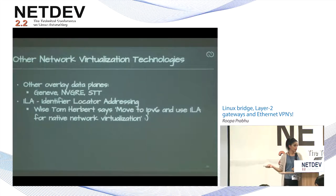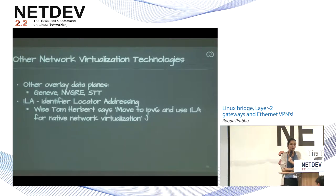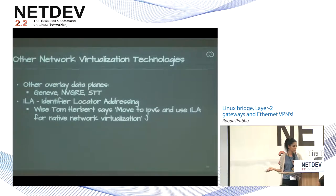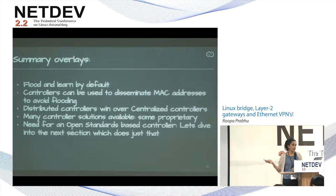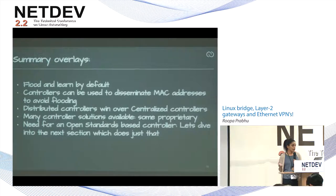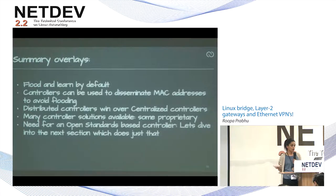Other networking technologies: you can use VXLAN, Geneve, or NVGRE in the same model. Summary: flood and learn by default, you need a controller to make these networks efficient — to distribute MAC addresses to every VTEP so they are reachable. Distributed controllers win over centralized controllers for obvious reasons. Many controller solutions are available, some proprietary. There is a need for an open standards-based controller, and that takes us to the next topic: eVPN.